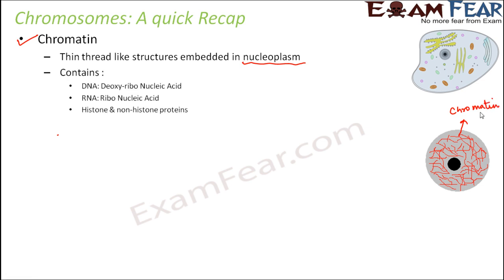So what do chromatin contain? They are composed of DNA, that is deoxyribonucleic acid, RNA, that is ribonucleic acid, and some histone and non-histone proteins. That is basically the composition of the chromatin.